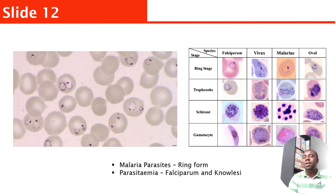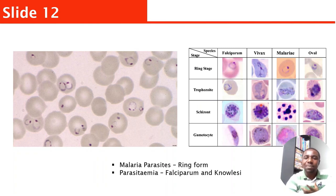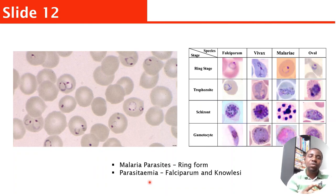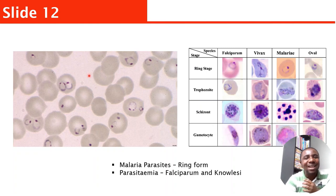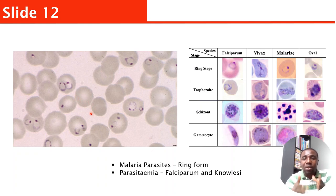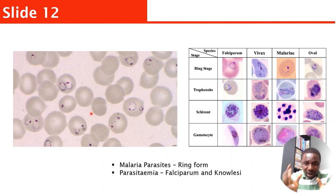This is malaria. You can see a lot of malaria parasites here, and they are all ring-form. You might need to look at different species and different stages of malaria parasite. Most likely they may give you ring-form malaria — tell them it is ring-form. If it is falciparum or knowlesi, you will need to do parasitaemia — meaning you quantify the amount of parasites in the red blood cells. Remember, you see the parasites inside the red cells, not outside them.